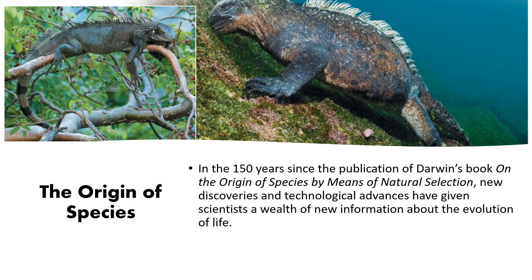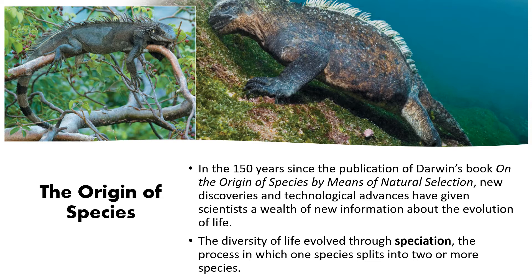Since Darwin published On the Origin of Species by Means of Natural Selection, there have been lots of new discoveries and advances in technology that allow scientists to look at evolution in different ways. One of the main ways scientists study evolution is through speciation — when one species splits into two different types. They are closely related but are no longer the same.